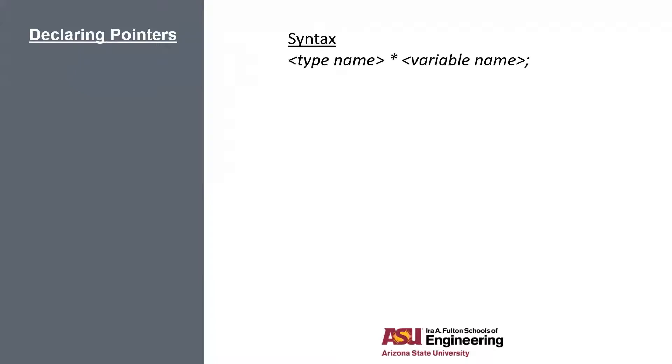The syntax for declaring a pointer is type name, star, and then variable name. Here are some examples. The first one is an integer pointer, so we use int as the type name, then star, then the name ptr. Same for the second one, it's a character pointer named c, and the third one is a double pointer named price. As you can see, it's the same as declaring a regular variable, but we just introduce the star in between the type name and the variable name.